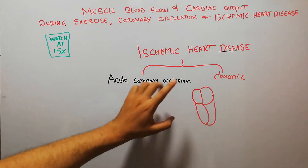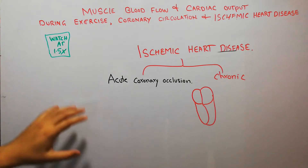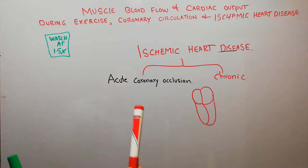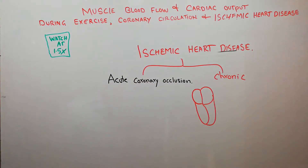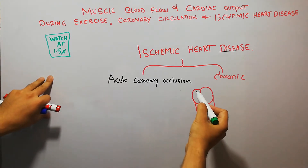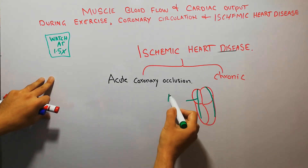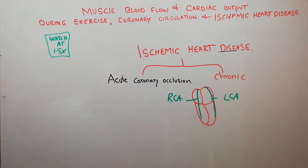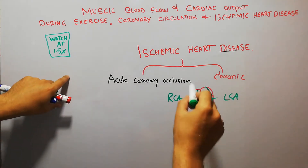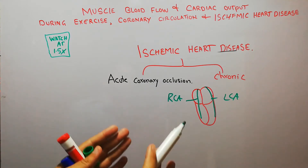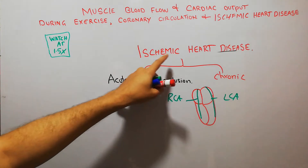Today we are going to talk about acute coronary occlusion. Acute coronary occlusion is one of the types of ischemic heart disease. In our last lecture we discussed that ischemic heart disease has basically two types: acute and chronic. Ischemic heart disease is due to any condition which decreases the blood flow to the heart muscle, supplied by the right coronary artery and the left coronary artery — RCA and LCA. Any condition that decreases blood supply to the heart muscles is labeled as ischemic heart disease.